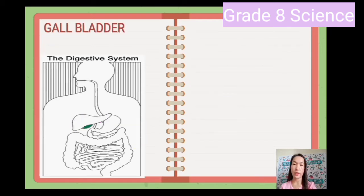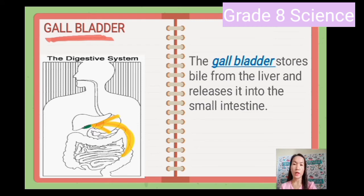Next is the gallbladder. The gallbladder stores bile from the liver and releases it into the small intestine.